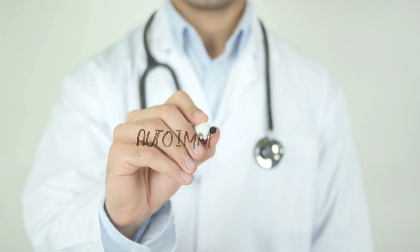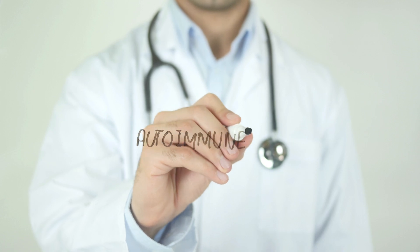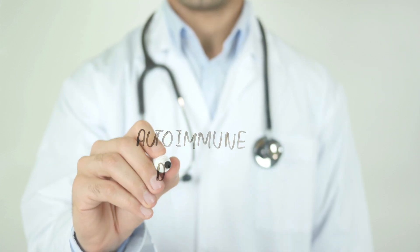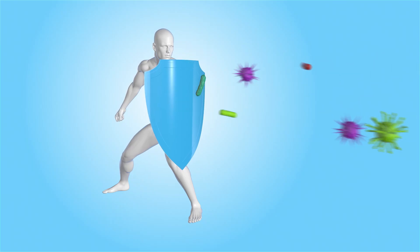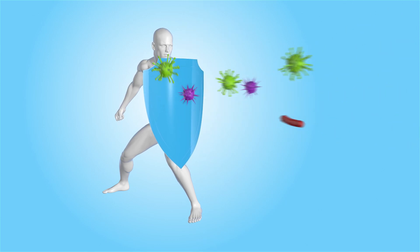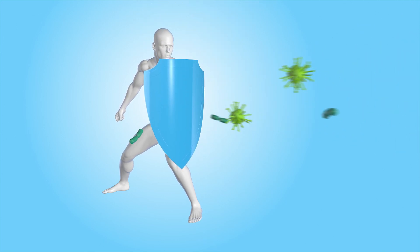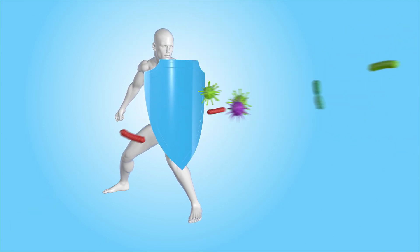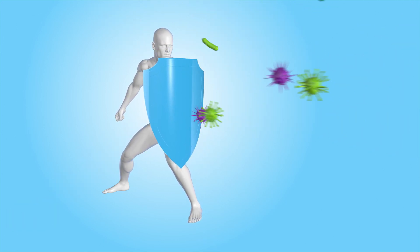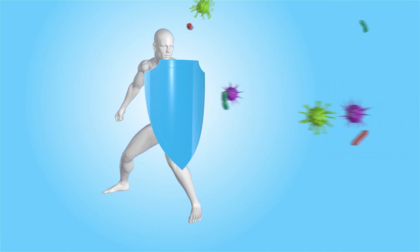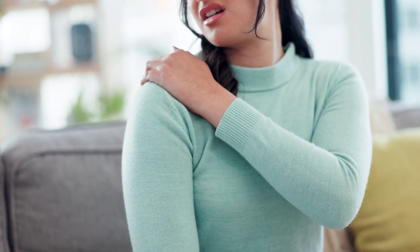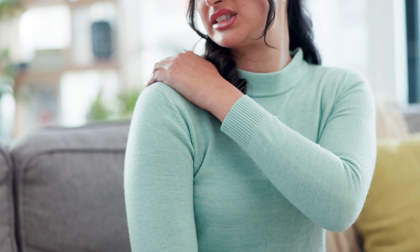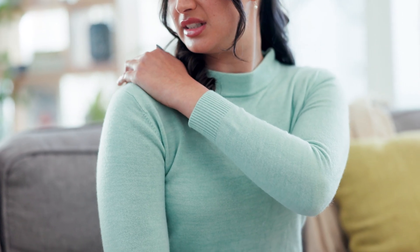Autoimmune rheumatic diseases are a group of conditions which happen due to your own immune system becoming a bit haywire and starting to affect normal tissues and organs of the body. There are more than 200 different types of autoimmune conditions. A lot of them affect the joints, but they can also affect other organ systems too.